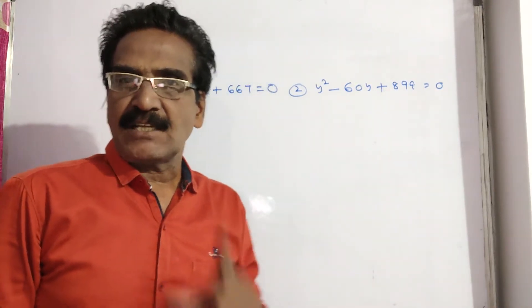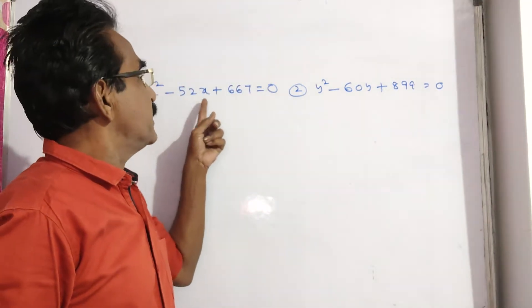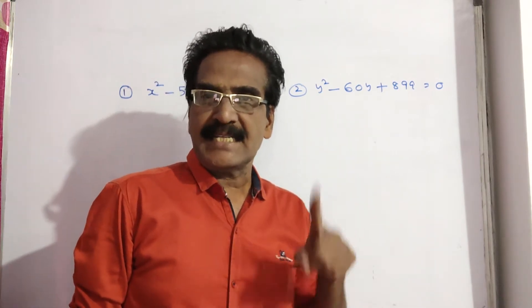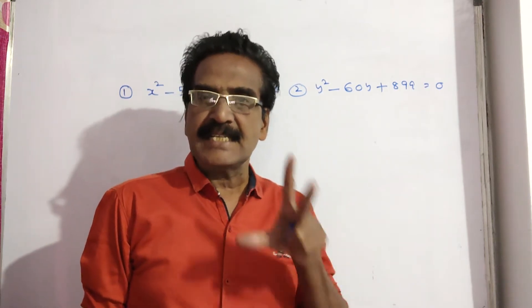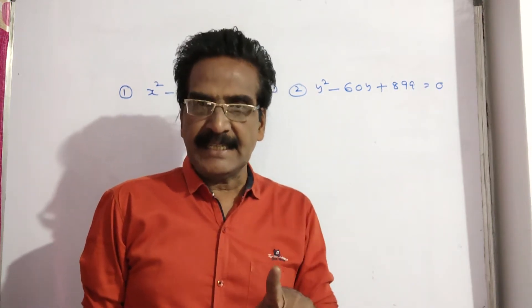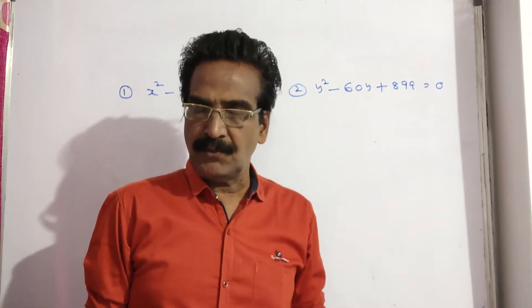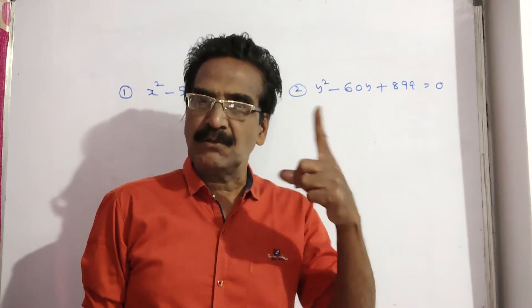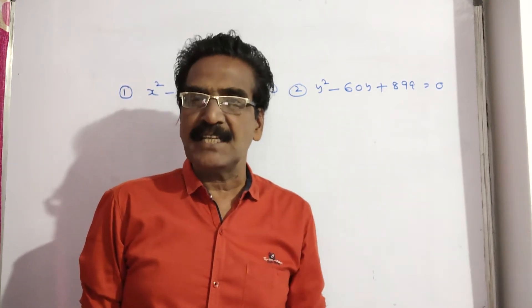See, both the equations are in the form of ax square minus bx plus c is equal to 0. If the given quadratic equation is in the form of either ax square minus bx plus c is equal to 0 or ax square plus bx plus c is equal to 0, if the given quadratic equation is in either of these two forms...